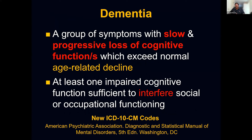These losses exceed the normal age-related decline. We all forget where the keys are, but that is not progressive and not dementia. An important criterion for dementia is that the impairment in cognitive function must be sufficient to interfere with social or occupational functioning — just forgetting is not enough; it must start to affect thinking, decision-making, or finding one's way home.